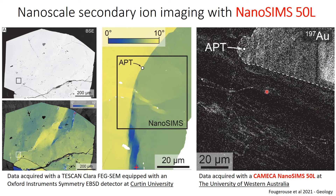What is not commonly observed — but we claim that it may be more present than we think it is — is that some linear features come across all of the domains, and these match well the position of the low angle boundary.